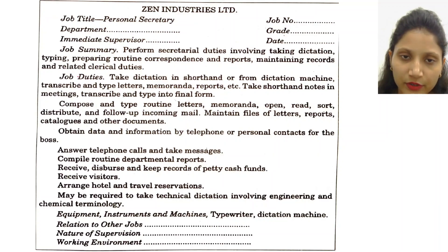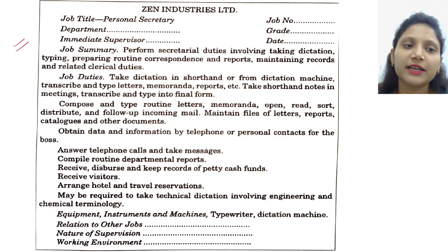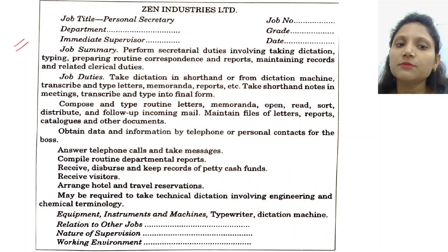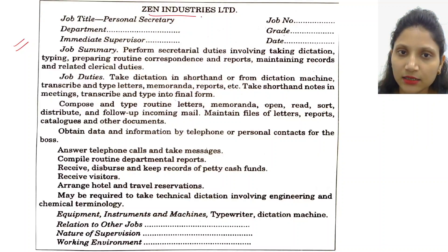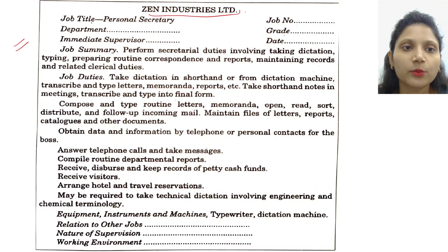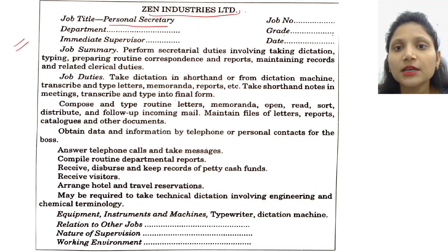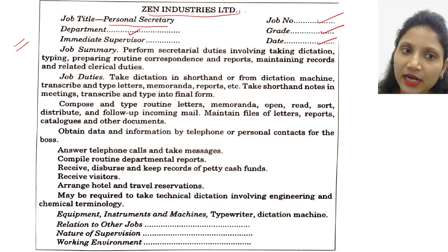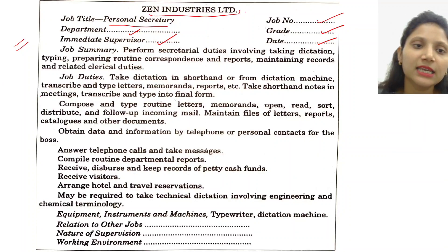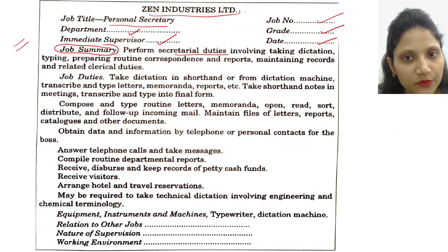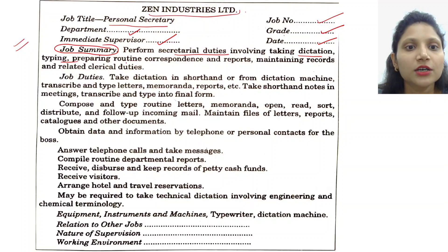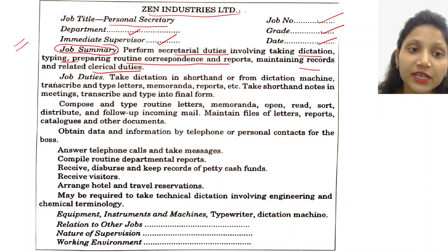Maine ek format aur specimen attach kiya hai taaki aapko idea lag jaye ki kis type ka job description hota hai — simply book se hi pick kiya hai. Yahan Zen Industries ka ek job description hai kisi ek particular job ka. Title kya hai — 'personal secretary'. Job number, pay grade, date kis date pe is job description ko release kar rahe ho, kis department me hogi, immediate supervisor koun hoga — yeh sab daal diya. Iske baad job summary — secretarial duties perform karega jaise dictation lena, typing karna, routine correspondence reports prepare karna, records maintain karna aur clerical duties. Fir duties ko specifically mention kiya.